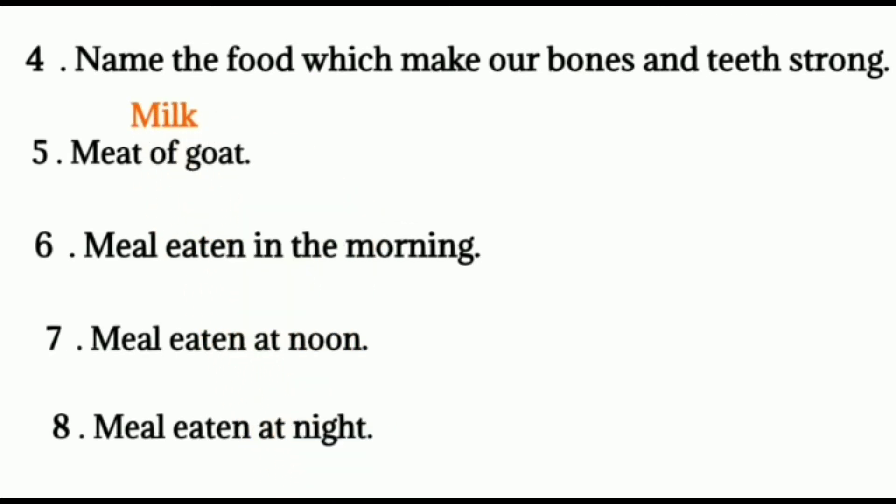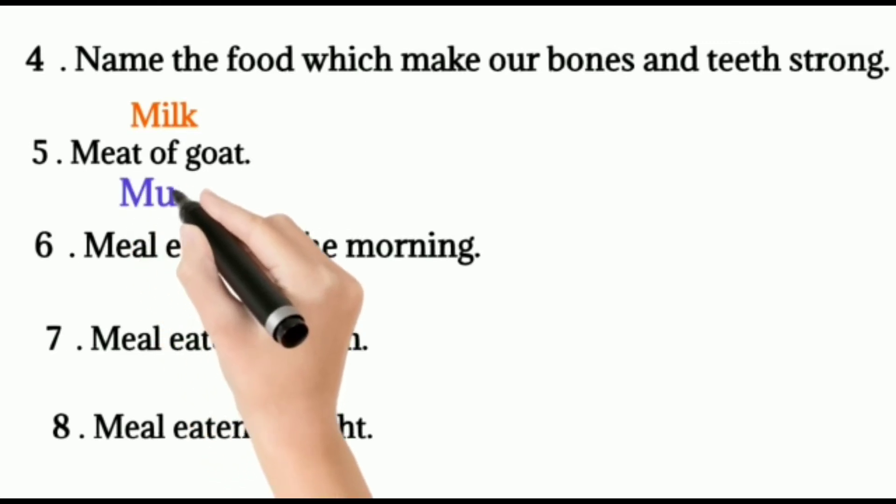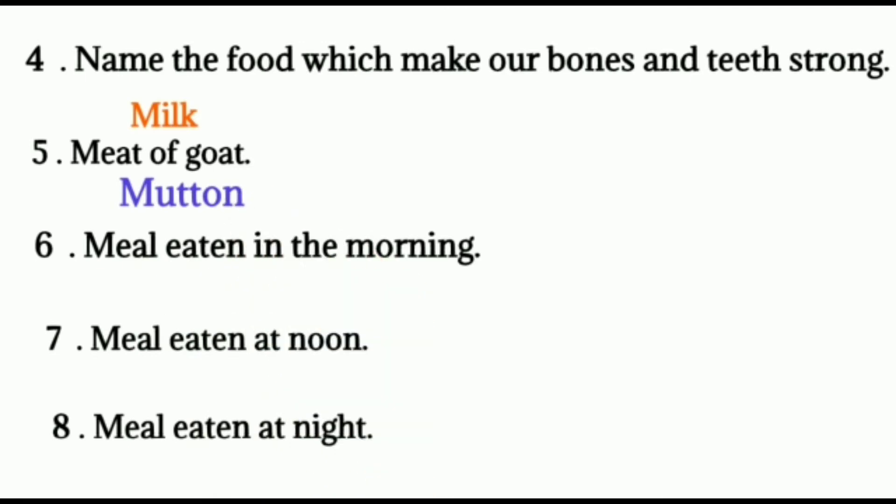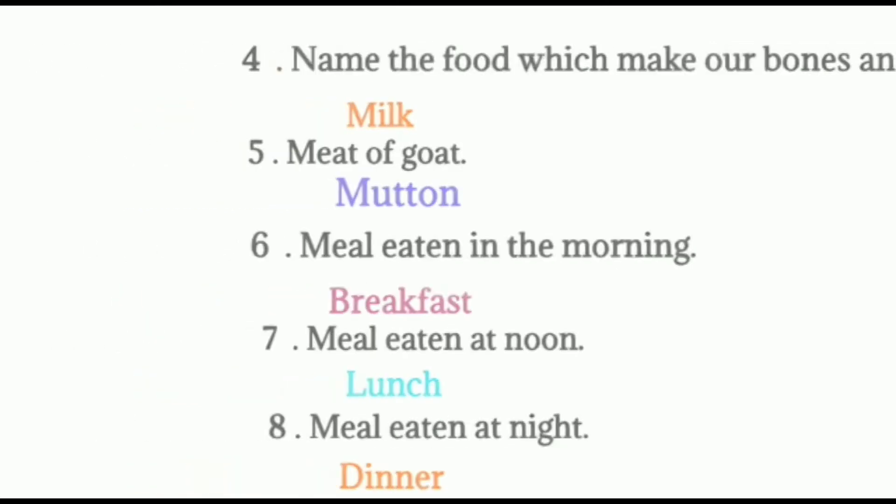Five, meat of goat. That is mutton. Six, meal eaten in the morning. That is breakfast. Breakfast is very important for us. We don't skip any meals. Meals eaten at noon. Lunch. Eight, meal eaten at night. That is dinner.